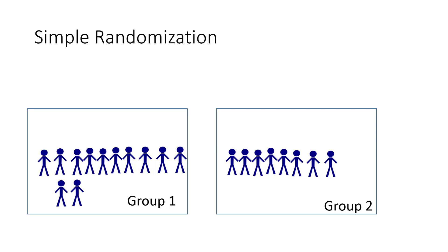In block randomization, you consider the number of groups that you have, pick a block size, calculate all permutations of allocation within that block size, and then randomly sample the blocks rather than the individual participants.